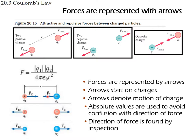We define direction by inspecting the diagram, which is why we don't use signs in the formula — we use absolute values. For instance, if a force points to the right along the horizontal, it's in the +x direction. If it points to the left, it's in the –x direction. One force pointing right is positive; the same force pointing left is negative. These signs refer to direction, not charge sign.